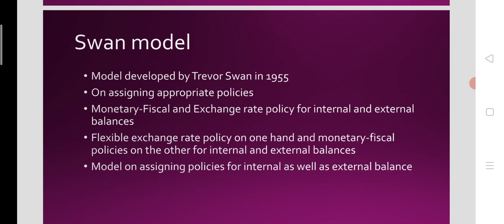Let me briefly introduce the Swan model. This is the model developed by Trevor Swan in 1955, regarding the assignment of appropriate policies. According to Trevor Swan, appropriate policies are two sets of policies for both internal balance and external balance. Internal balance is economic stability in the domestic economy where there is no unemployment and no inflation — the economy is in stability.